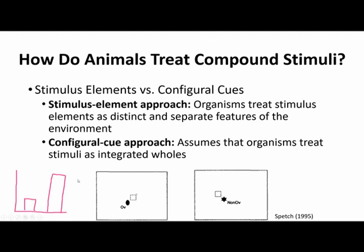Under the configural cue approach, we would expect pretty much no responding to just the overshadowed landmark on its own, because if the compound stimulus was learned as something separate and not made up of individual elements, presenting one element alone shouldn't mean anything. Our data would have looked much different under a configural cue setup. There are studies that, when set up properly, can show a configural cue approach, but the ones discussed here have all lined up with the stimulus element approach.